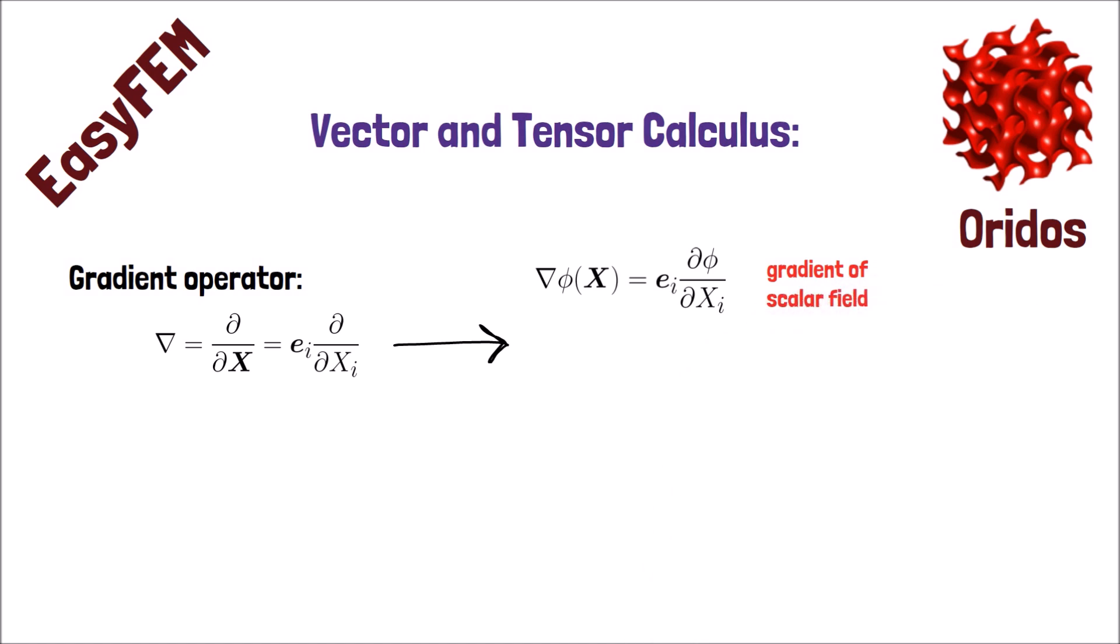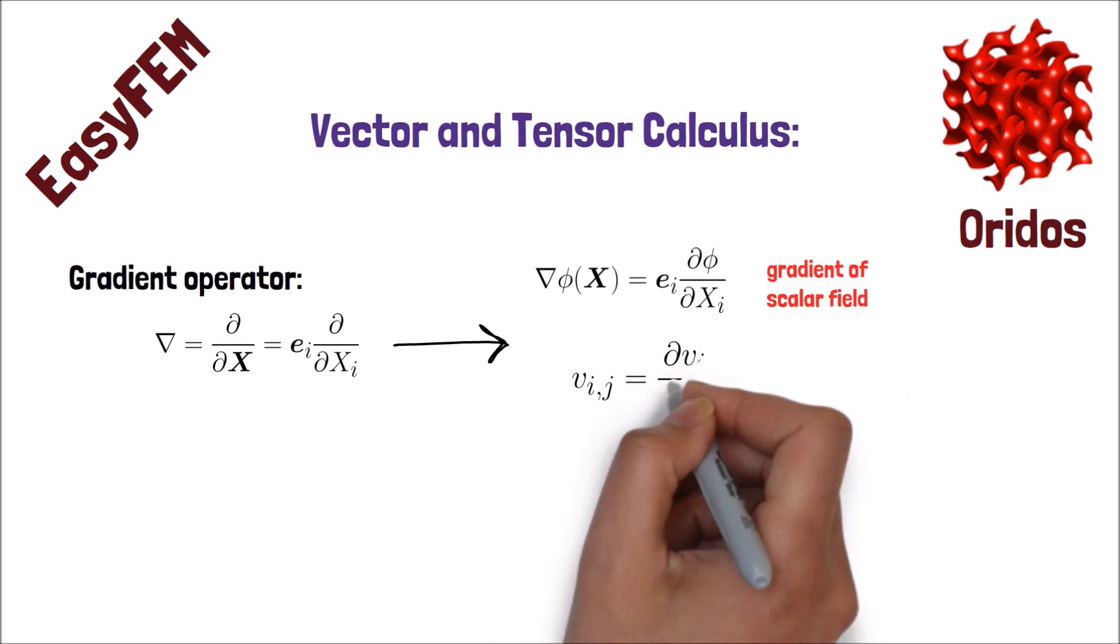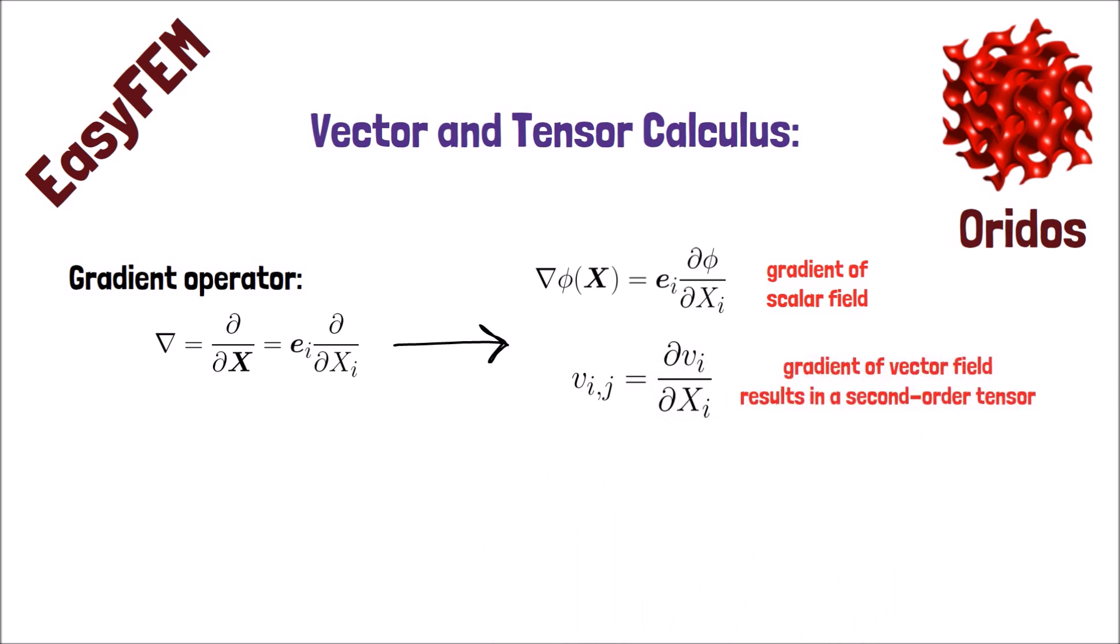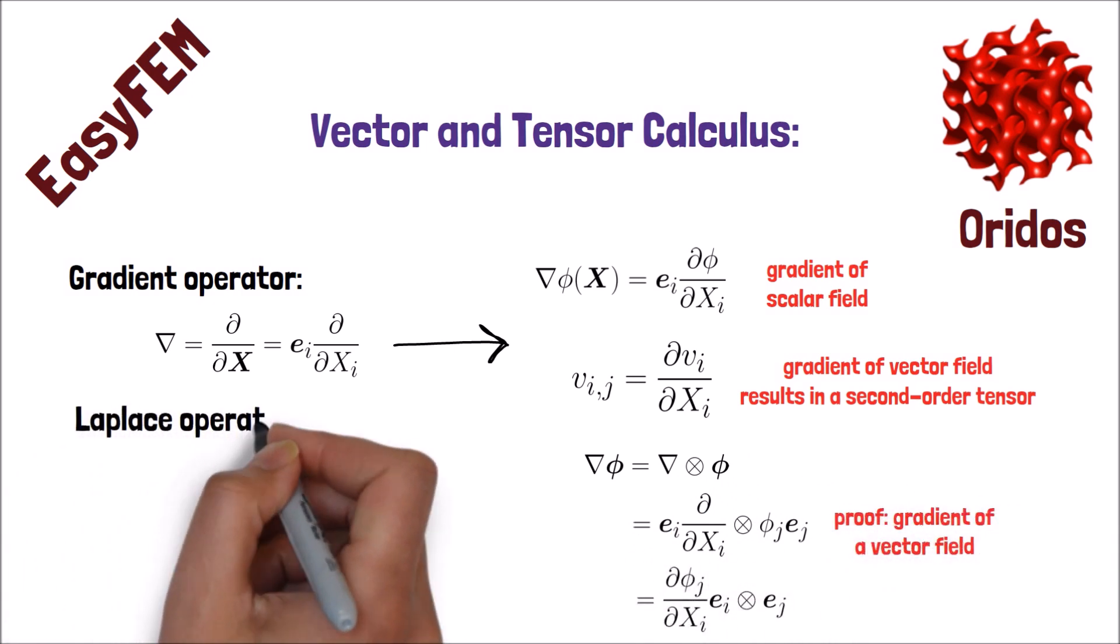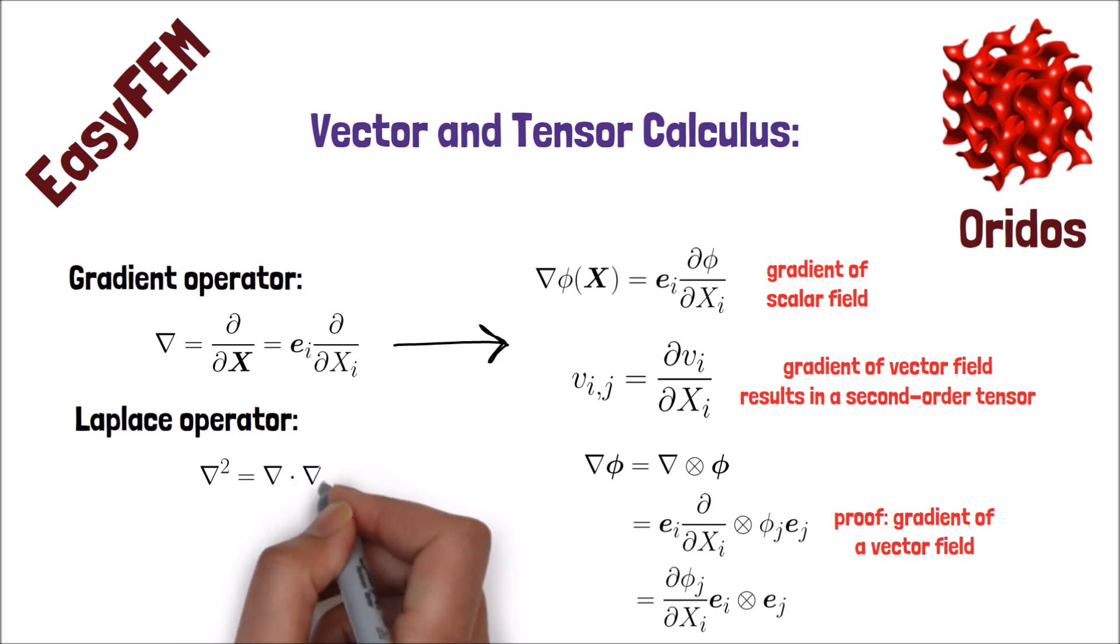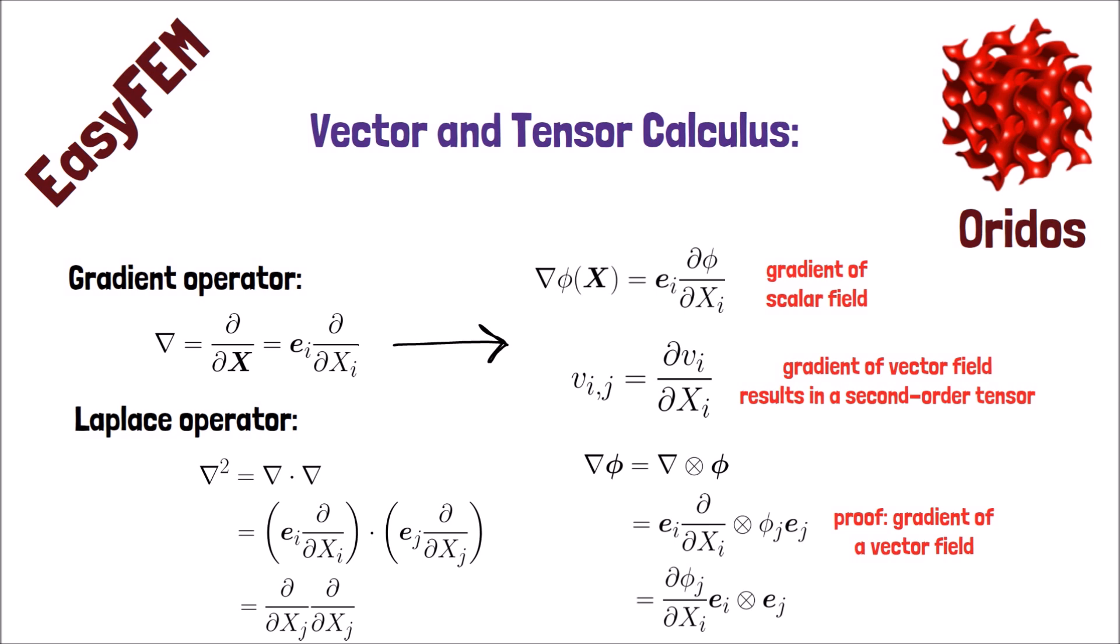Likewise, applying the gradient operator on a vector field will result in a second-order tensor. For example, here is the proof. This is the definition of the Laplace operator, in which we apply divergence on the gradient operator, which I am going to talk about divergence in a moment.